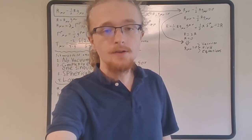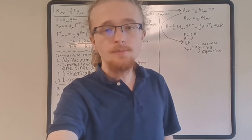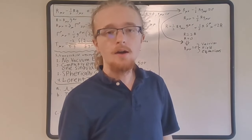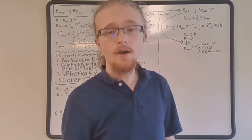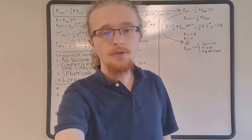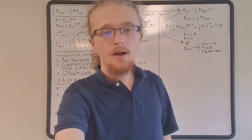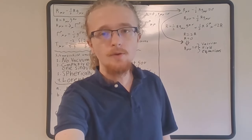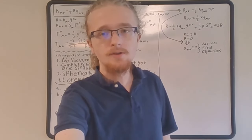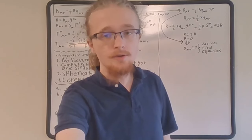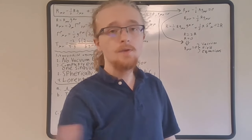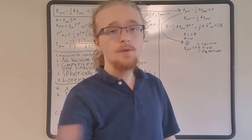We are solving the vacuum field equations to find the unknown metric functions. Specifically, we must insert the Schwarzschild ansatz into the equation R_μν = 0, which will give differential equations satisfied by the unknown metric functions. The first step is to calculate the Christoffel symbols for the Schwarzschild ansatz. There are 13 non-zero Christoffel symbols; all the rest of the 64 are zero. I will only show the calculation of the 13 non-zero ones because the others trivially evaluate to zero.